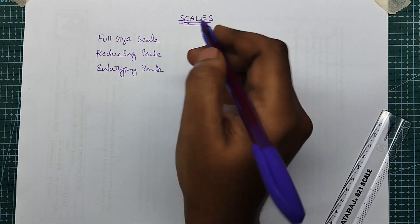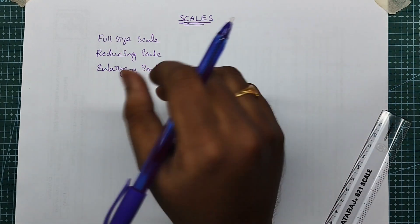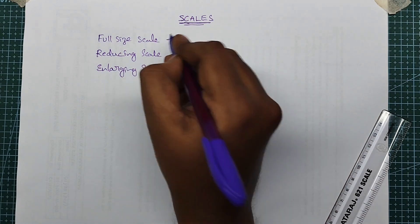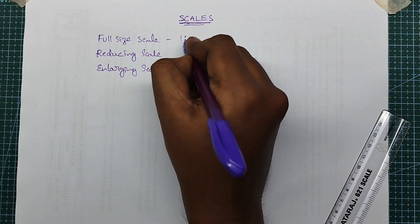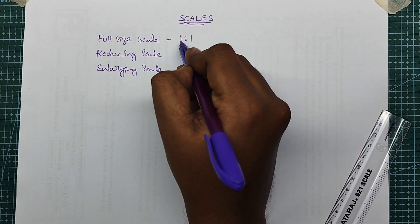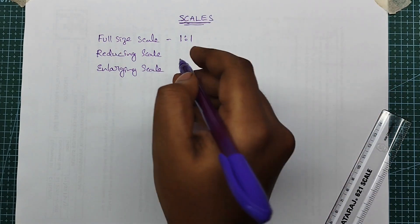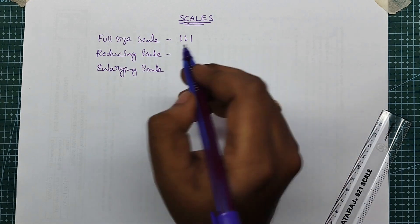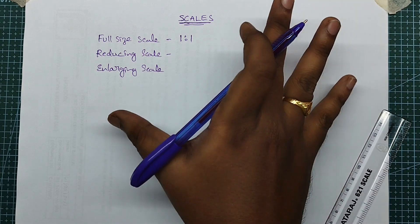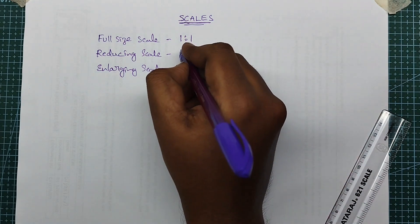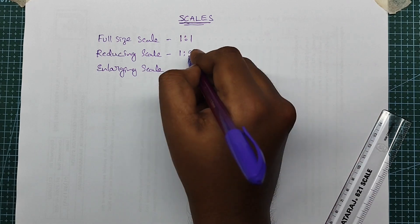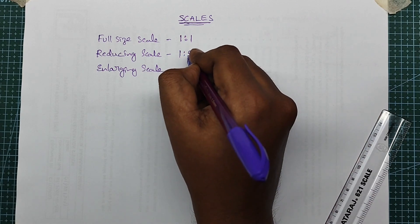Full size scale uses a ratio of 1 to 1. We represent the same size scale. We represent 1 to 1, and also 1 to 2.